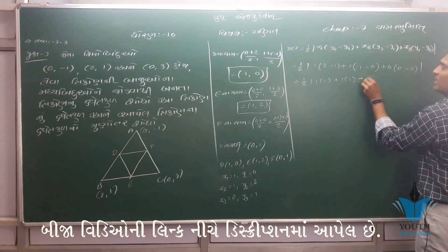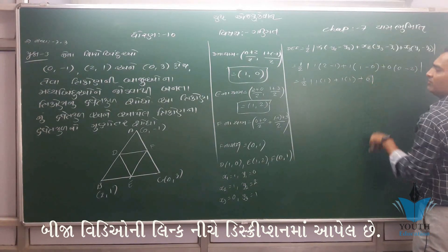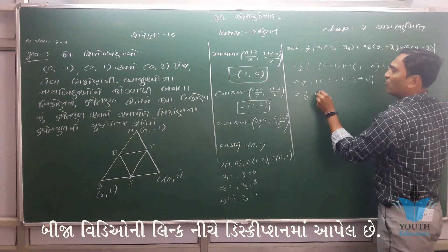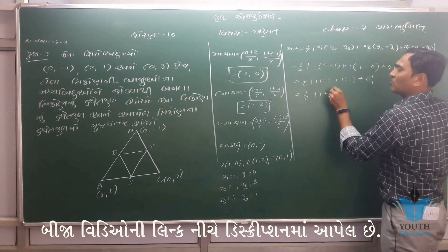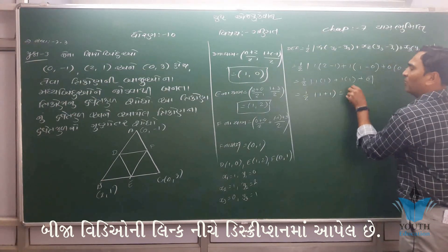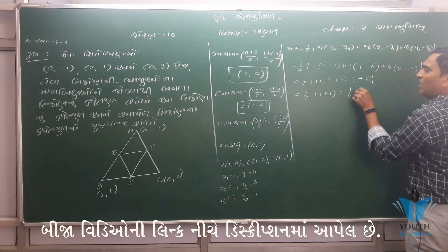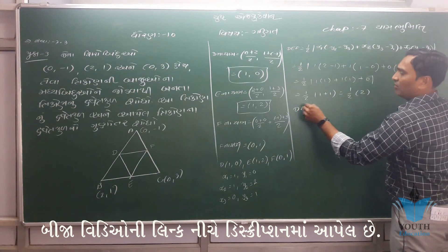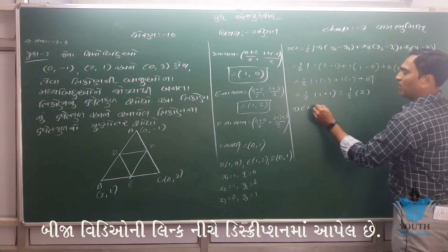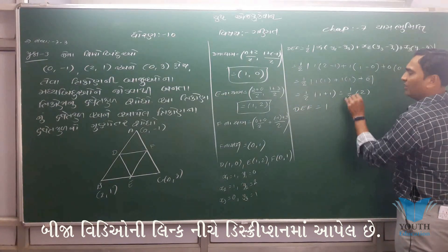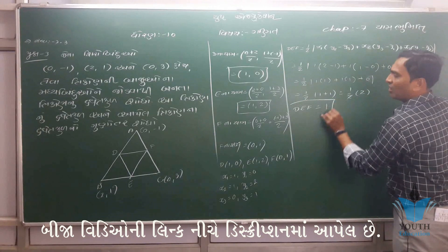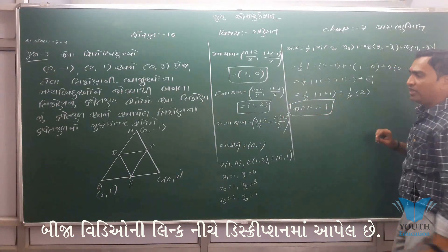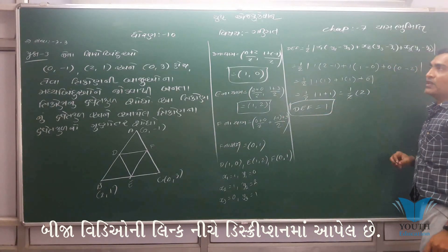x3 times 0 is equal to 0. So at (1/2) is equal to 1 plus 1. Therefore, at (1/2) is equal to 2. So DEF equals 1. We are equal to 2. So the value of our area is 1.